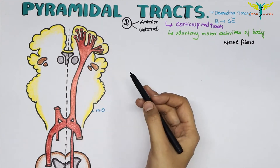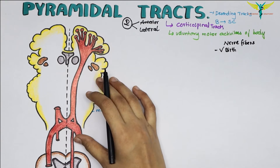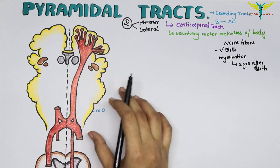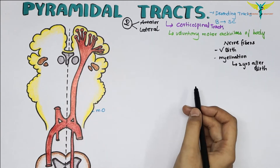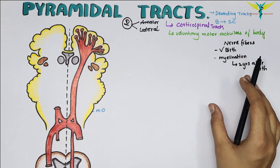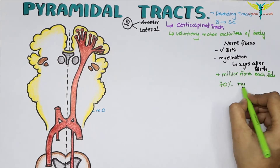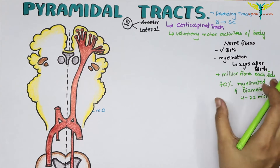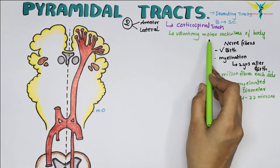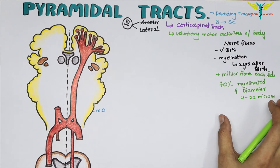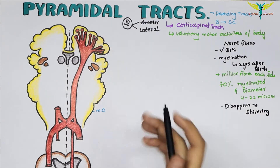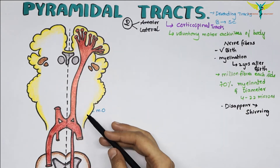All the nerve fibers of the pyramidal tracts are present since birth, but myelination of these fibers is completed in about two years after birth. The pyramidal tracts on each side have more than a million fibers, and about 70 percent of these fibers are large and myelinated, having a diameter of 4 to 22 microns. These large fibers have a tendency to disappear at old age, which causes automatic shivering movements in old age.